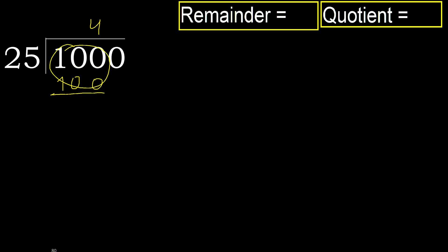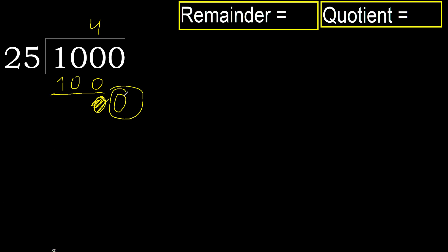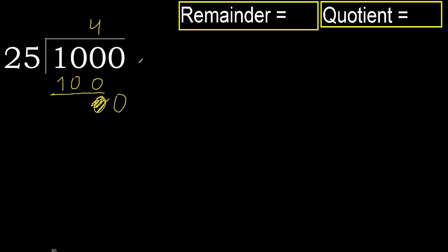Subtract. 100 minus 100 is 0. Next, eliminate 0. 0 is less, therefore next.